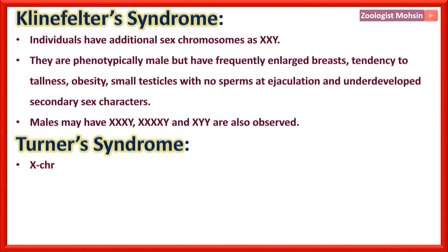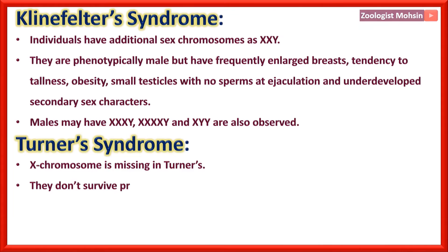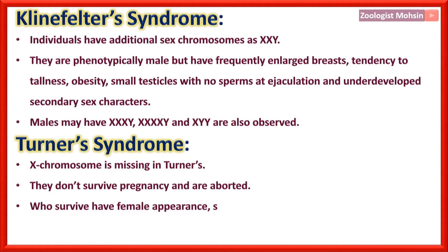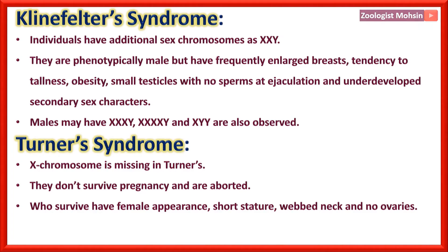Turner syndrome: one X chromosome is missing (X0), since normal females have XX. Those affected do not survive pregnancy and are aborted; those who survive have female appearance, short stature, webbed neck, and no ovaries.